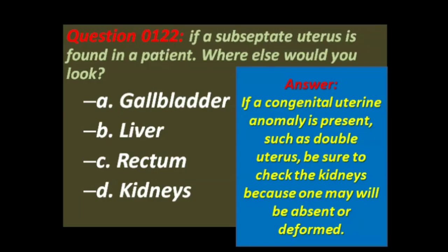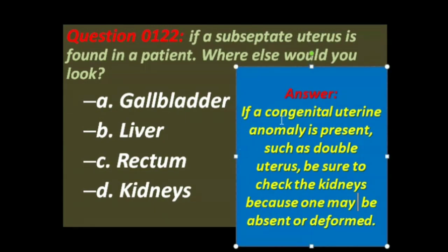In a previous video, there was a question: if a septate uterus is found in a patient, where else do you look? The options were gallbladder, liver, rectum, and kidneys. The answer is D — the kidneys. If a congenital uterine anomaly is present, such as double uterus, be sure to check the kidneys, because one may be absent or deformed.